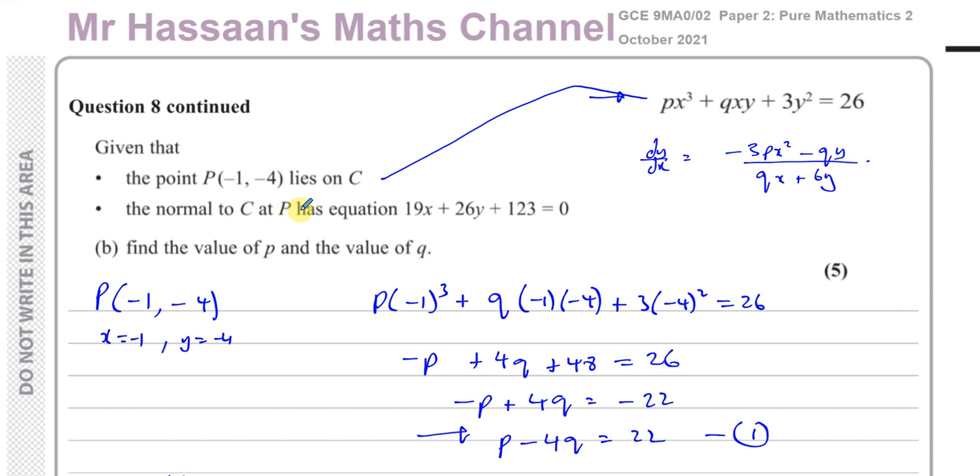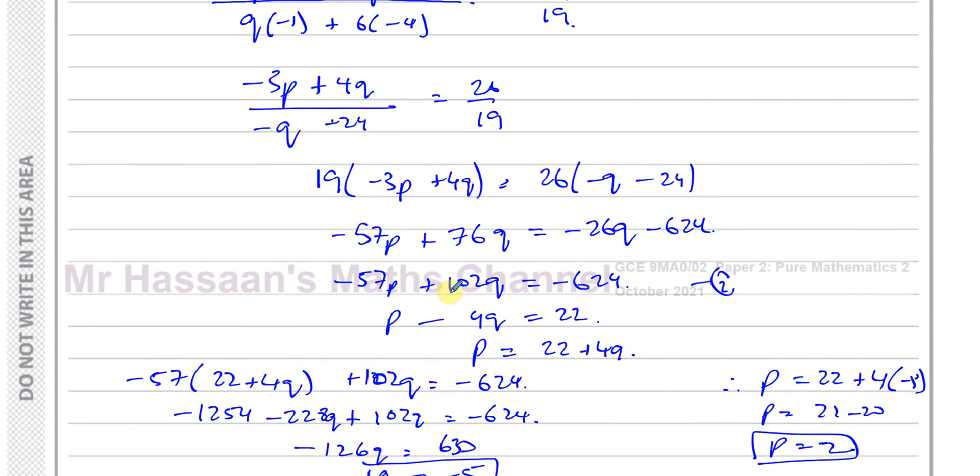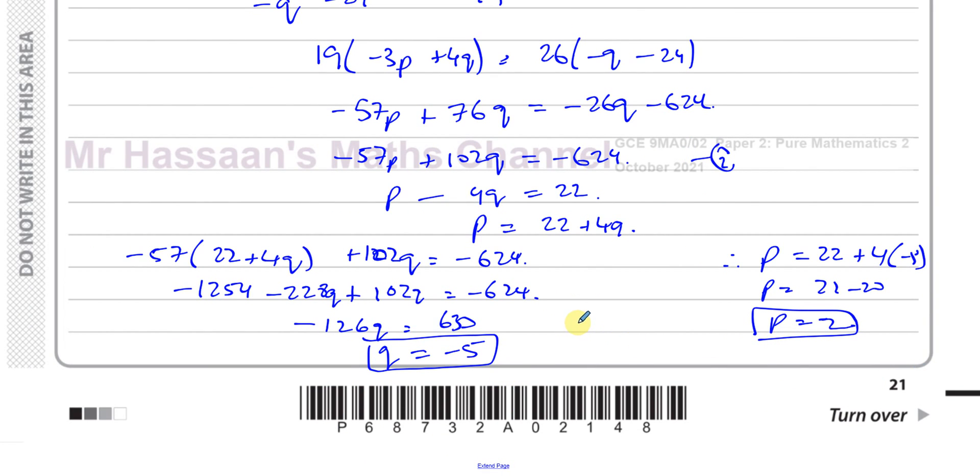And we know that the normal to the curve at P has the equation given by this. So this is to do with the gradient. The normal has got something to do with the gradient of the curve. The normal is perpendicular to the gradient of the curve at that point. So we find, we rearrange this to make y the subject so we can read the gradient of the normal. The negative reciprocal of that would be the gradient of the curve. So dy/dx would be the negative reciprocal of the gradient of this curve. And then we used that, equated that to that, and we ended up with another equation. And then we had a pair of simultaneous equations in p and q. Looked a bit weird at this stage but it worked out to be nice easy numbers and we've ended up with the answer.